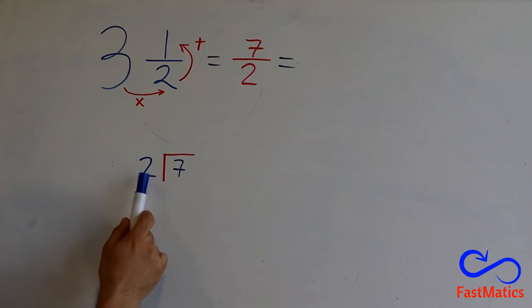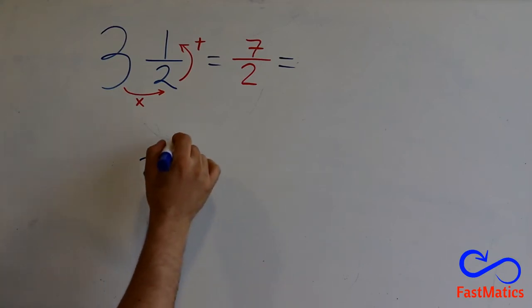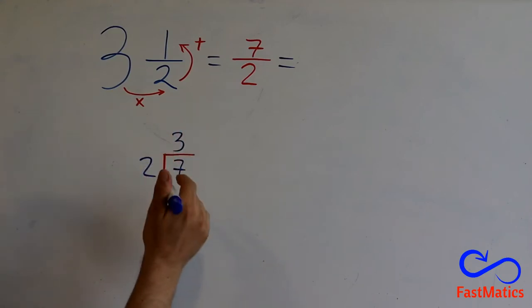And we see, 2 times what number is 7 or less than 7? 2 times 3. 3 times 2 is 6, to get to 7 we need 1.